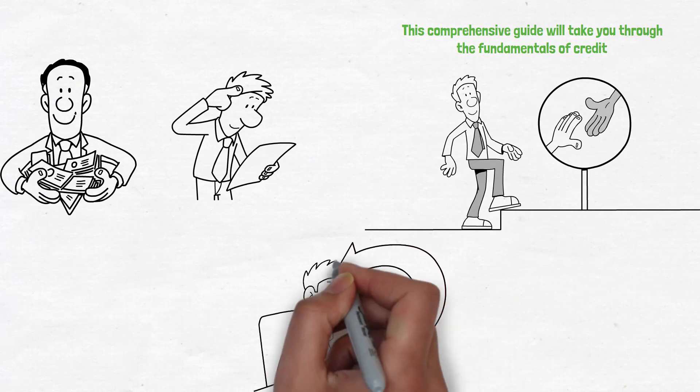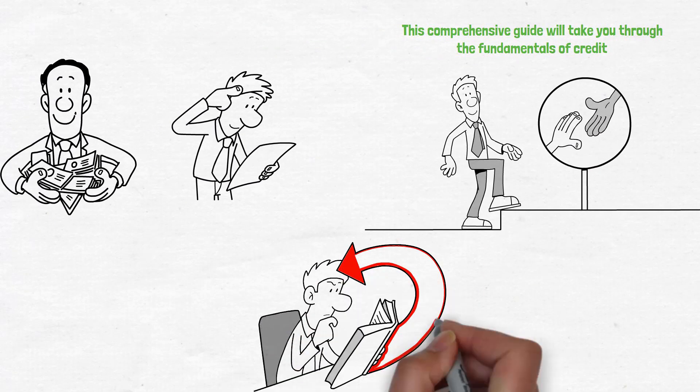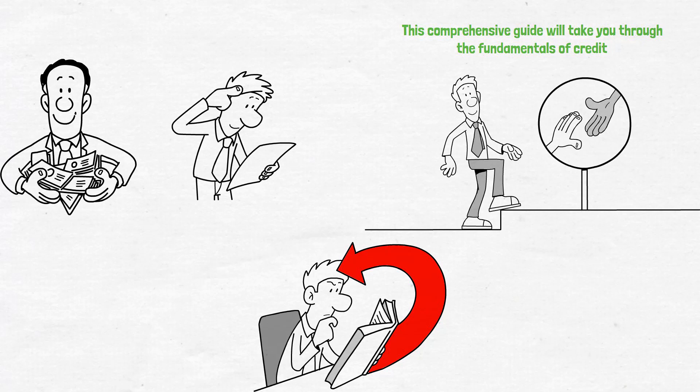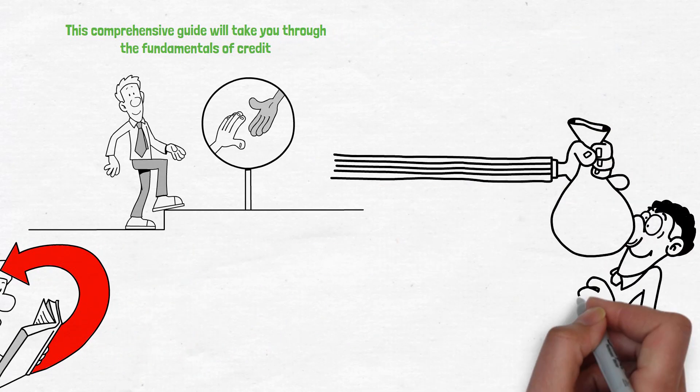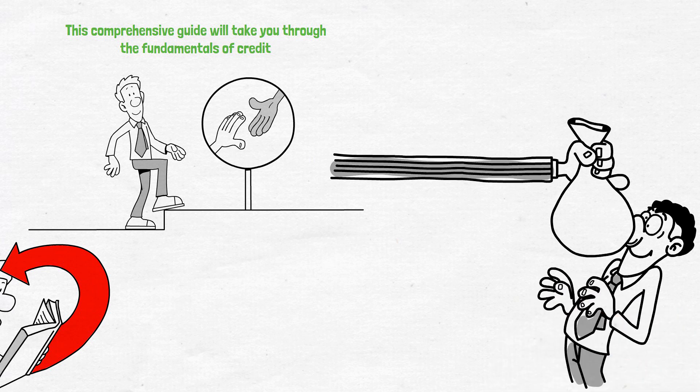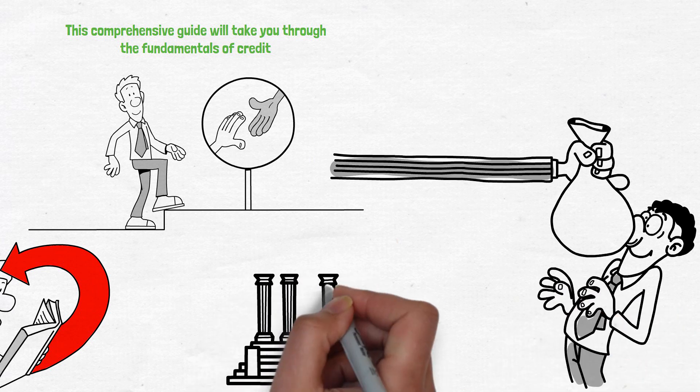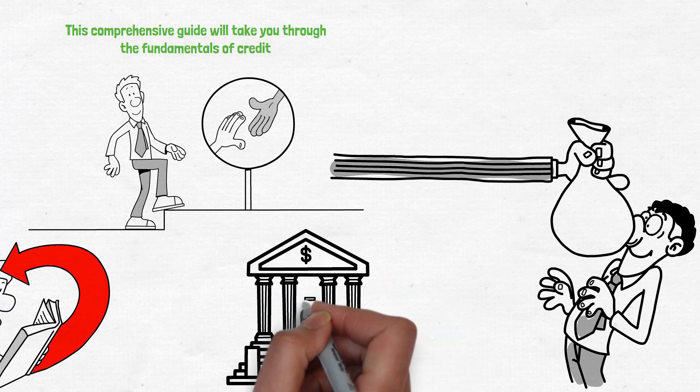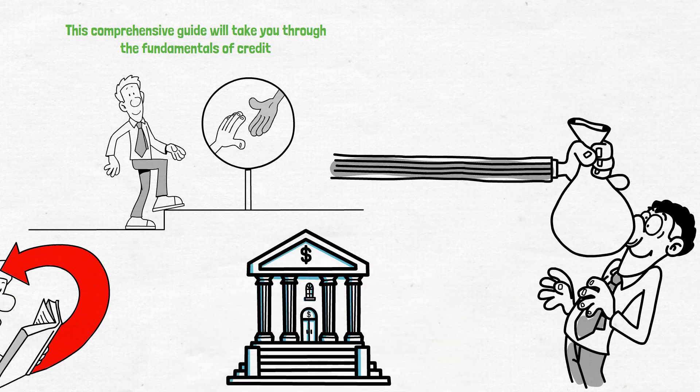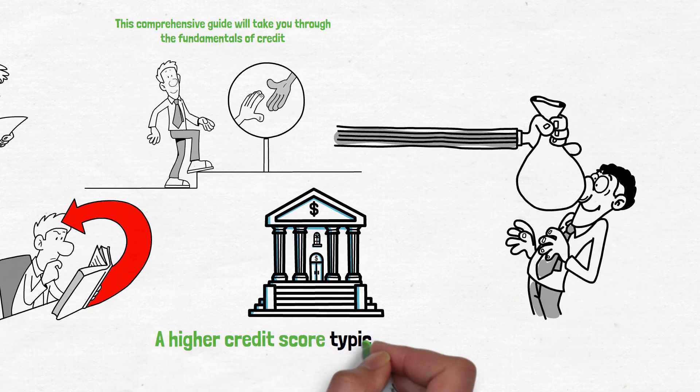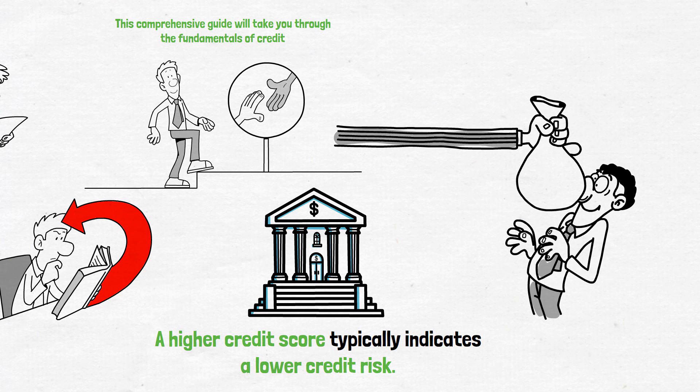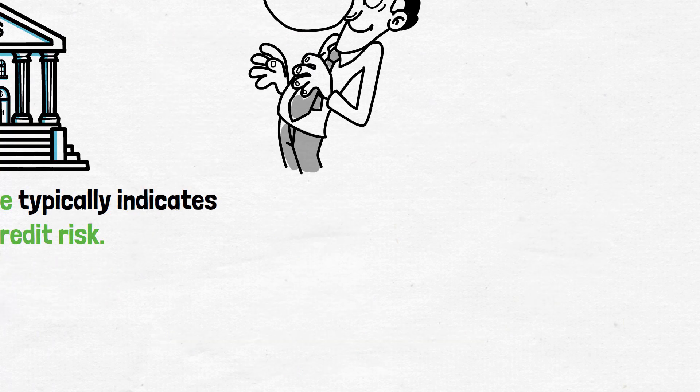Before delving into the steps to build credit, it's essential to grasp the concept of credit itself. Credit represents your ability to borrow money or access financial resources with the promise to repay it later. Lenders, such as banks and credit card companies, use your credit history to assess your creditworthiness when you apply for loans, credit cards, or mortgages. A higher credit score typically indicates a lower credit risk, making it easier to qualify for better interest rates and financial opportunities.